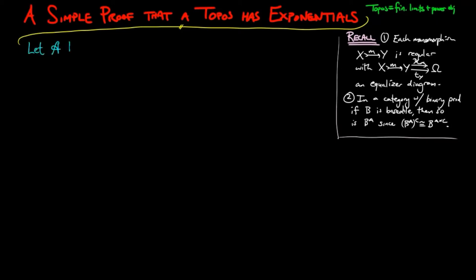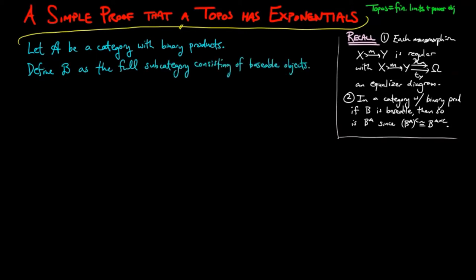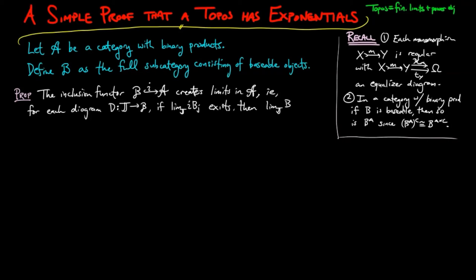We first let A be a category with binary products and define B to be the full subcategory consisting of baseable objects. Then we can show that B is closed in A under the construction of limits. In other words, the inclusion functor creates limits, i.e., for each diagram D in B, if the limit of ID exists, then the limit of D exists and I preserves it.